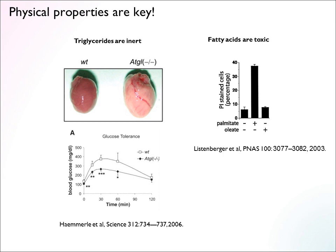A dramatic example of how inert triglycerides are came from a paper where the enzyme that breaks down triglycerides in the heart was discovered. In the knockout mouse that cannot break down these triglycerides, there is phenomenal accumulation of lipids — the heart almost looks like a piece of butter. Despite this, these mice are perfectly glucose tolerant and don't seem to have any major phenotypes or disorders, showing how benign triglycerides are. In contrast, fatty acids are really toxic — basically soap, a detergent that attacks membrane structures very quickly. This is often referred to as lipotoxicity. Free fatty acids need specialized carrier proteins to carry them, otherwise they wreak havoc and cause tissue damage.